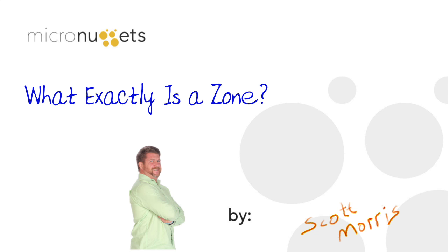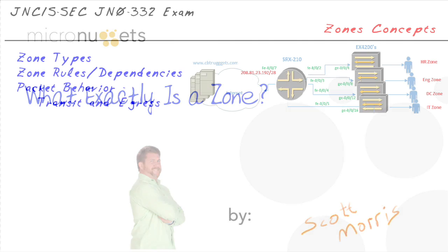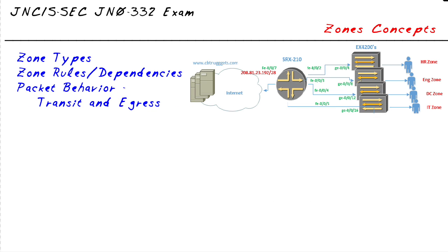What exactly is a zone anyway? It's not like the ozone. In this micronugget, we're going to talk about what the SRX, our security gateway in Junos, thinks about zones. Quite simply, a zone is a group of interfaces with similar security needs.